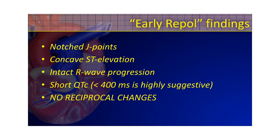Talking about early repol, here are some characteristics — not hard rules, but characteristics. Notched J-points may be present; they often are. Concave ST elevation must be present — if it's convex, just consider it an MI for all intents and purposes. Intact R-wave progression — if it becomes delayed, that favors an anterior wall MI. Short QTc: it's called early repol for a reason, so the T-wave must be close to the QRS complex — less than 400 milliseconds is much more suggestive. And no reciprocal changes — if you have reciprocal changes, it's an MI until proven otherwise.